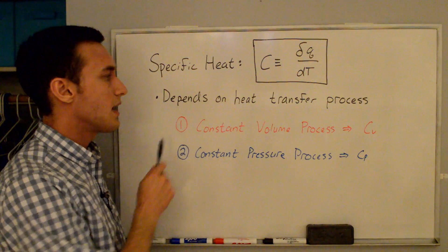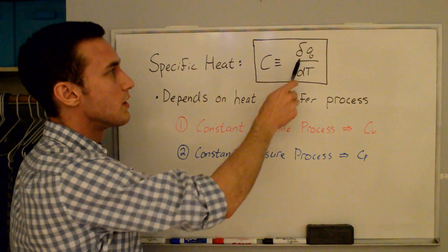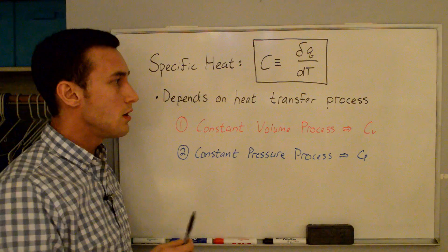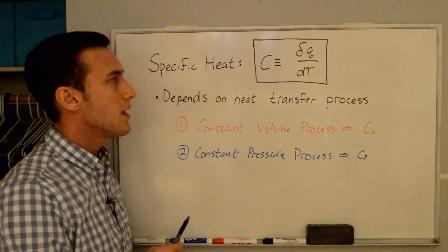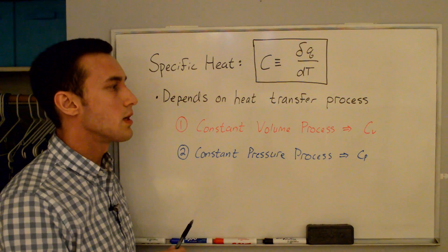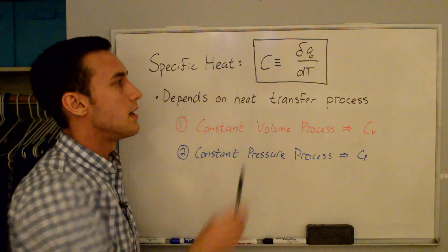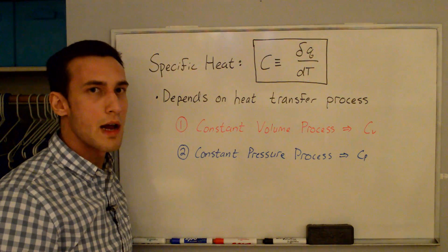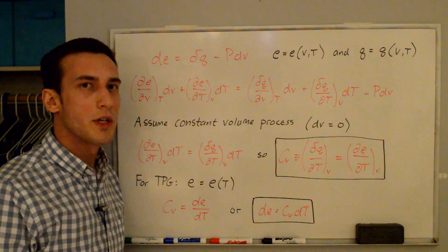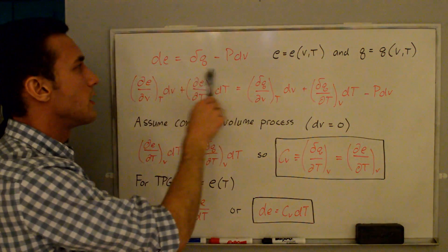cv is the constant volume process — if we carry out the heat transfer process at constant volume we get cv. And if we have a constant pressure process we end up getting cp, which is where the heat transfer is carried out at constant pressure.